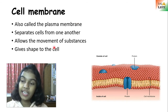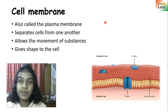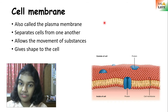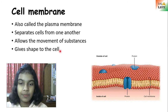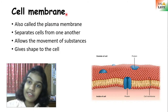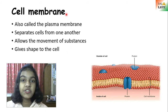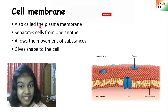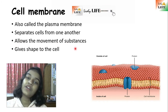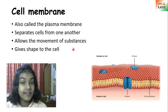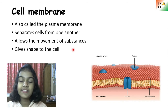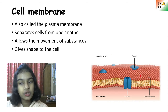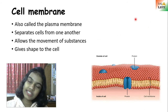The cell membrane also gives shape to the cell — without it, cells would have no definite shape. Now, some necessary particles still need to move in and out of the cell, so the cell membrane allows movement of certain substances. It is permeable and allows water, minerals, and certain necessary substances to pass through the membrane, whether from outside to inside or inside to outside.